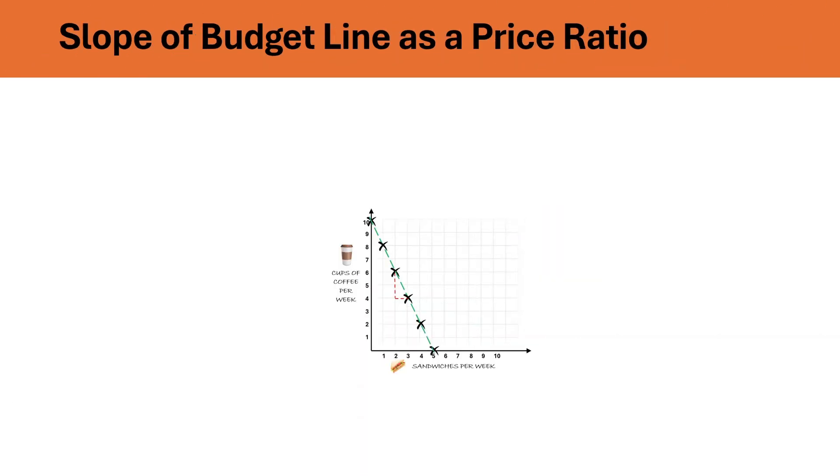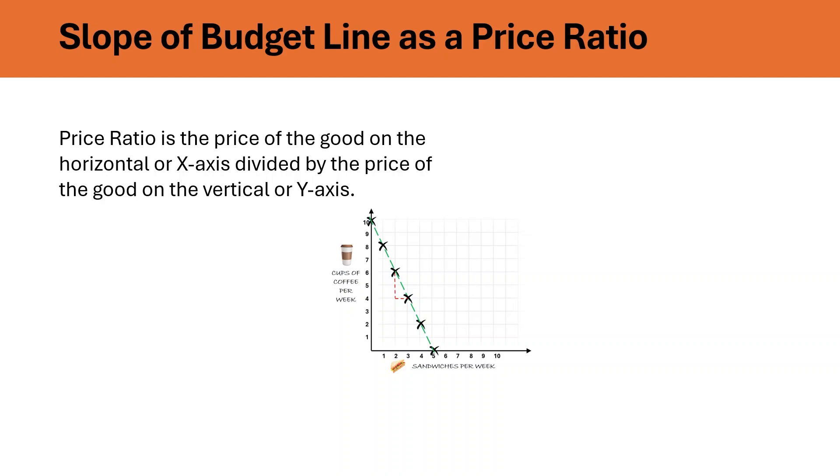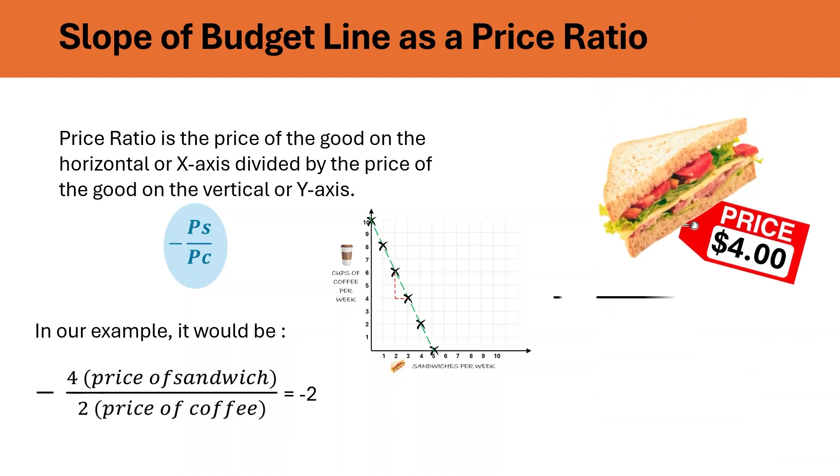First, let us define what is price ratio. Price ratio is the price of the good on the horizontal or x-axis divided by the price of the good on the vertical or y-axis, which would be minus PS over PC in our example. This would be price of sandwiches divided by the price of coffee, which is minus 2.